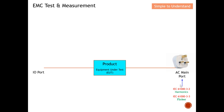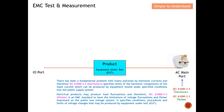Next I'll discuss IEC 61000-3-2 (harmonics) and IEC 61000-3-3 (flicker). There has been a fundamental problem with mains pollution by harmonic currents. IEC 61000-3-2 specifies the limits of harmonic components of the input current that equipment can produce under specific conditions into the public supply system. The DUT can generate significant harmonic current which may disturb the public supply system.